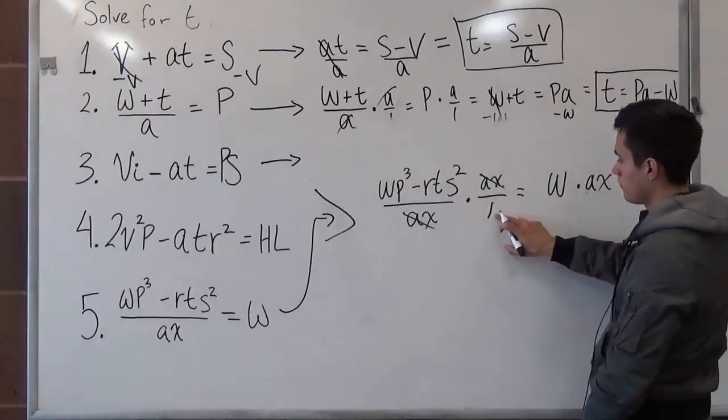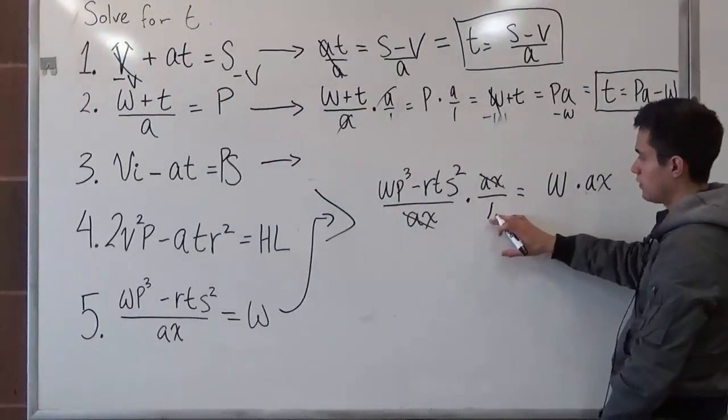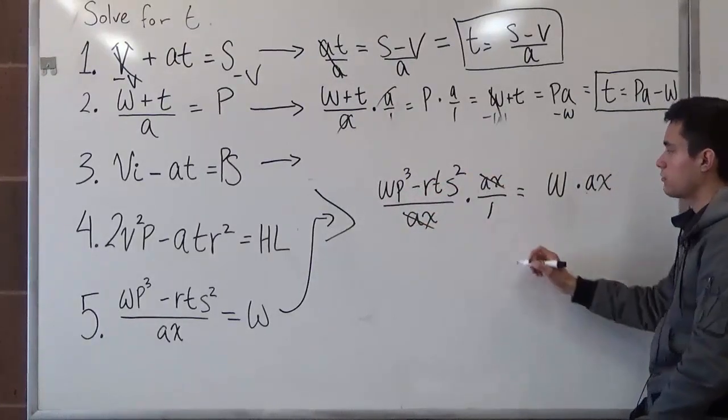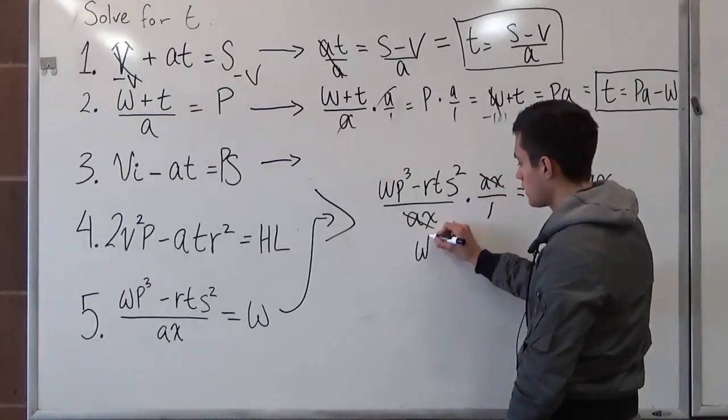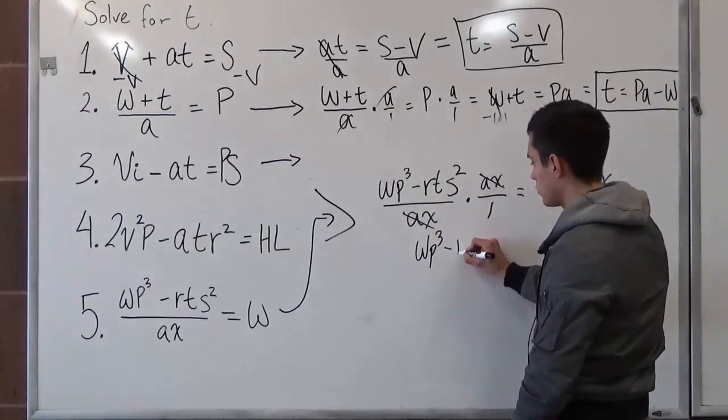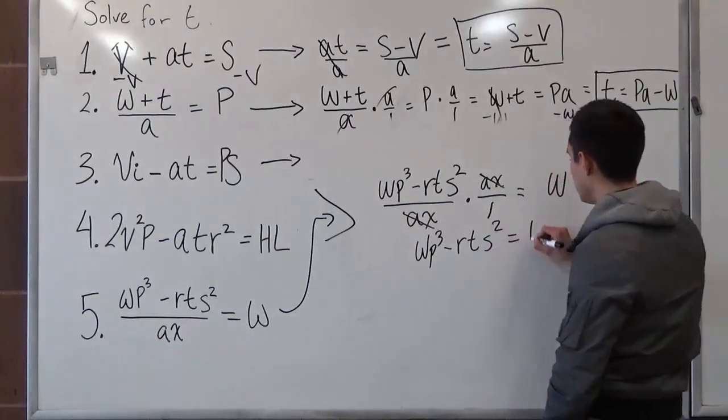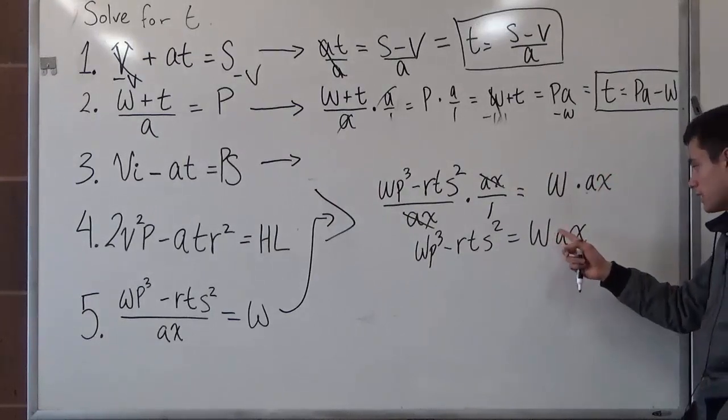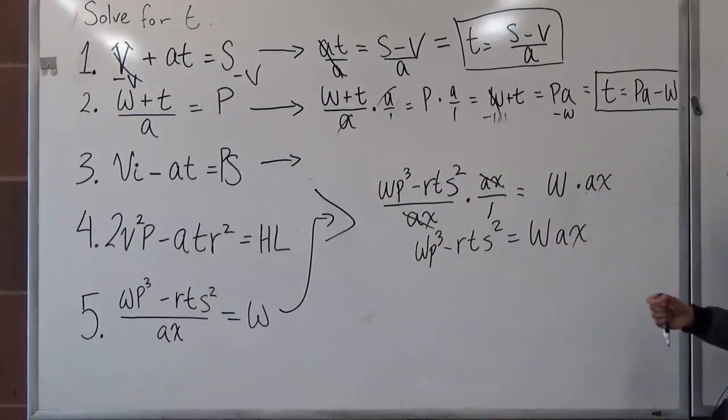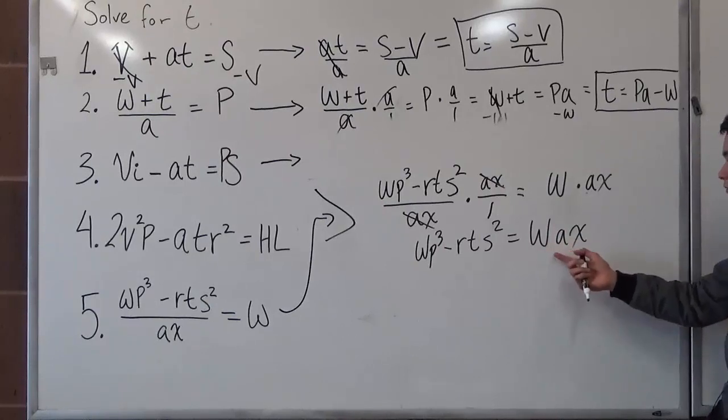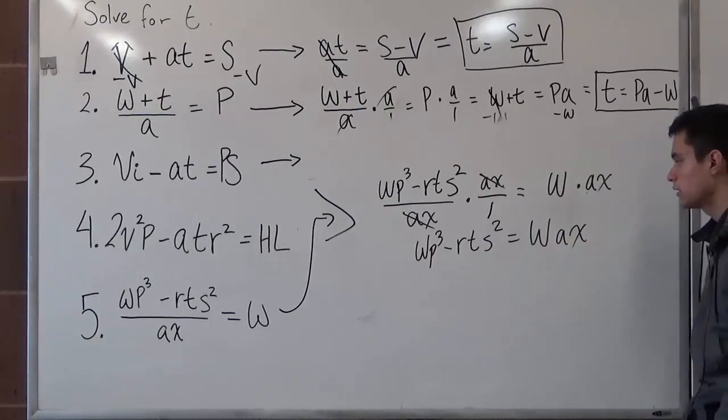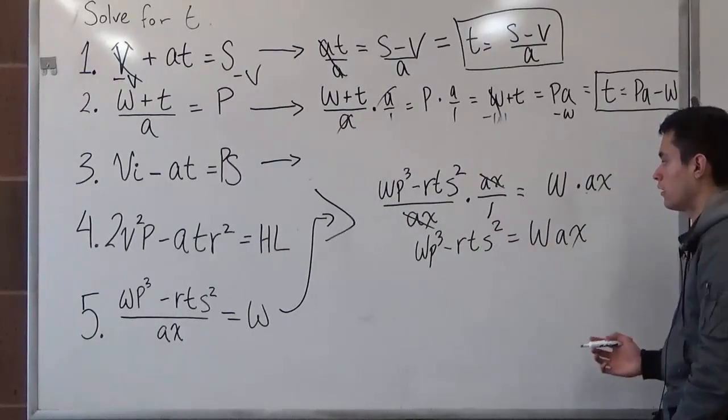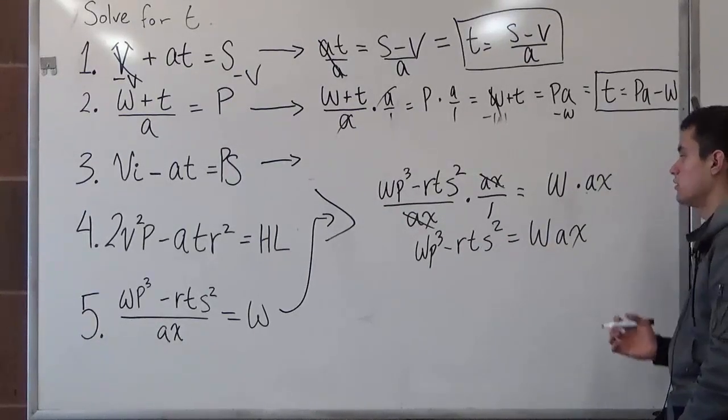So the 1 is basically just another way to say wp to the third minus rts squared. So it doesn't really matter. wp now to the third minus rts squared is equal to wax. Always pretend that there's an imaginary multiplication sign because this in terms just means w times a times x. So now we're starting to see that the problem has no denominator and it's becoming easier for us to work with.